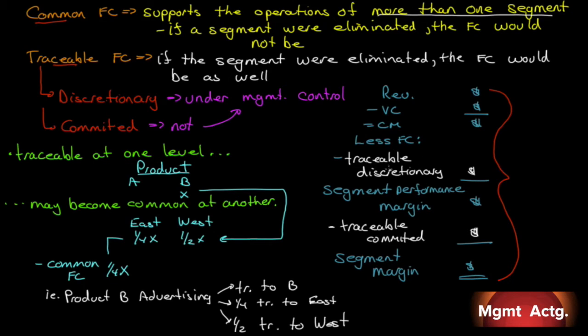Less our fixed costs. Now in the previous screens, what I've done is I've just taken off traceable fixed costs to get to the segment margin. But here I'm breaking it down by traceable discretionary and traceable committed because this number in the middle becomes important. Follow me here. Once we have our contribution margin, we will take off our traceable discretionary costs. These are costs that are under management control. From that, we get something called the segment performance margin.